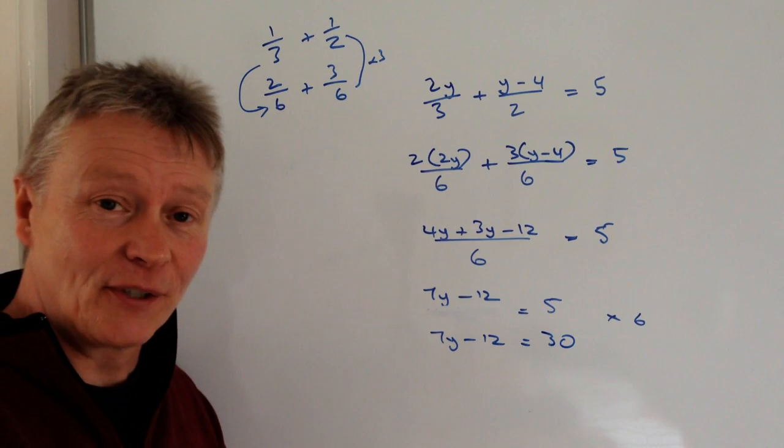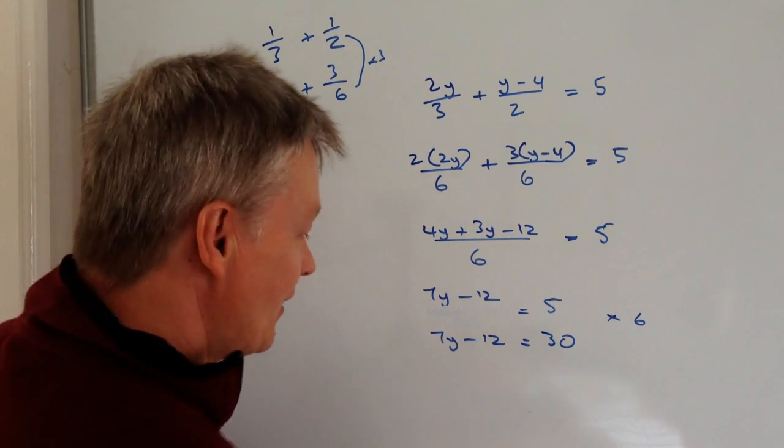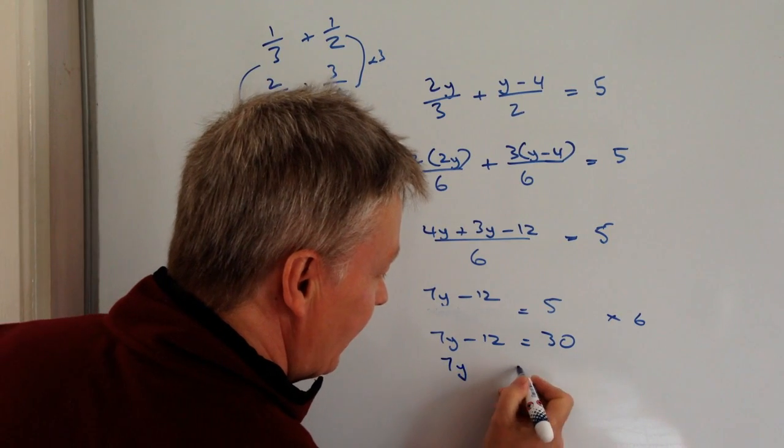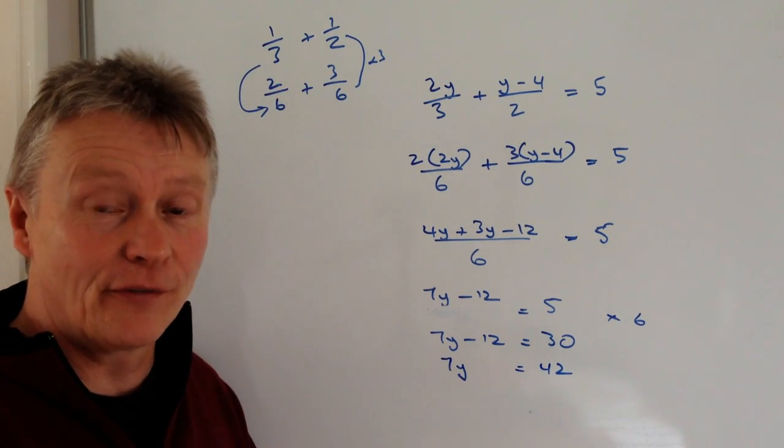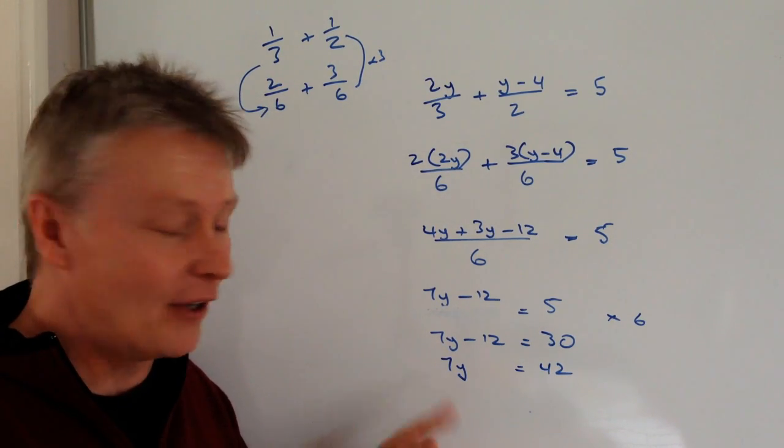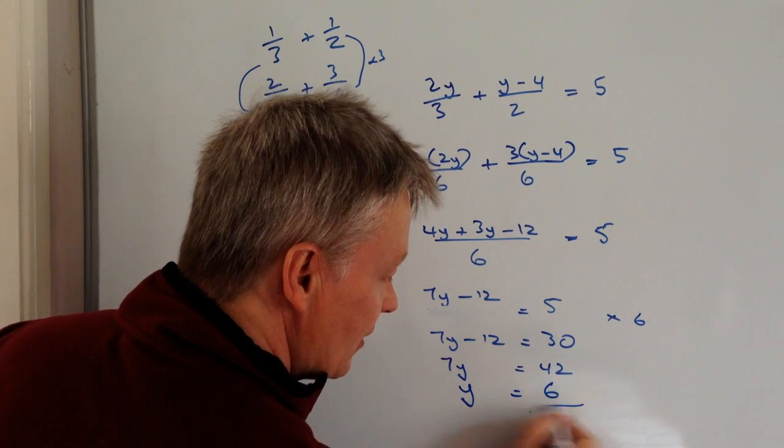So 7y minus 12 equals 30. I'm going to add 12 to both sides. If I do that, I get 7y equals 42. And that should give you some degree of confidence then, because I can divide through by seven. And that means then that y equals six.